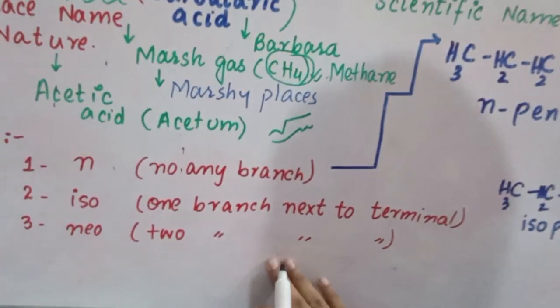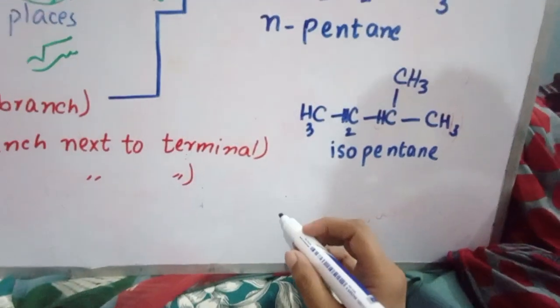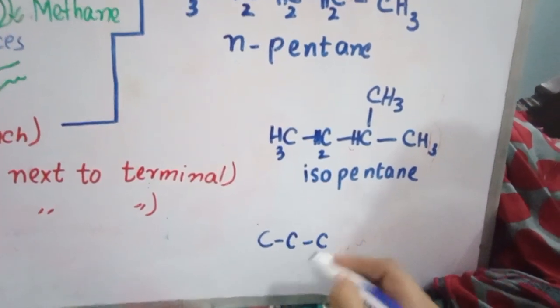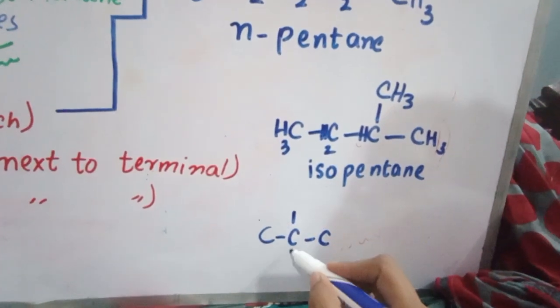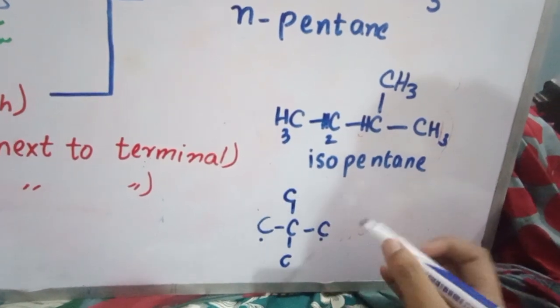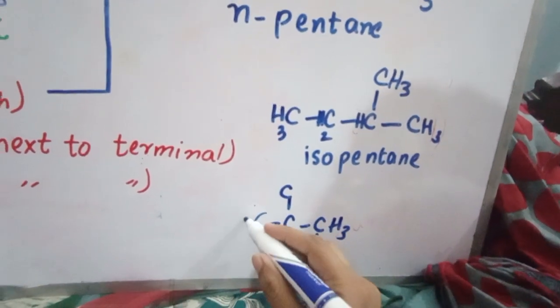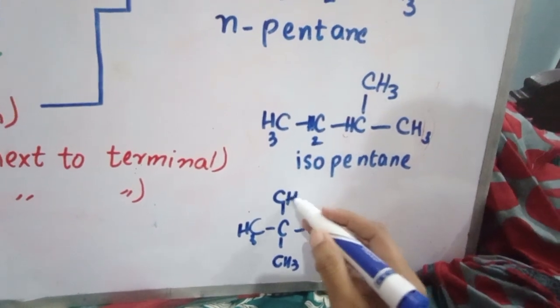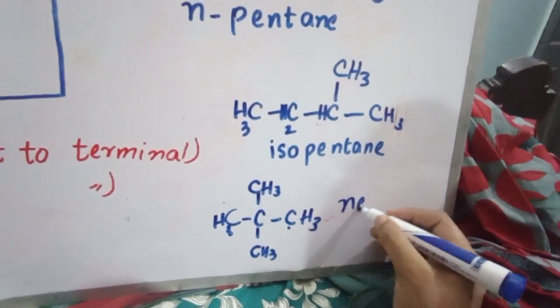Now, two carbons next to the terminal. I will take these 5 carbons, but I will draw 3 carbons as a chain and 2 carbons - this is terminal, this is terminal, next to the terminal - these will be branches. Now I will complete the valences of carbon, and it will be neopentane.